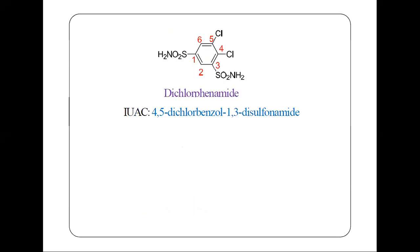The next carbonic anhydrase inhibitor is dichlorphenamide. The structure of dichlorphenamide has a benzene ring with 2 chloro groups and two sulfonamide groups attached. For numbering, we give preference to the sulfonamide groups. Starting from the sulfonamide, going toward the other sulfonamide: positions are 1, 2, 3, 4, 5 — giving us 4,5-dichloro-benzene-1,3-disulfonamide.